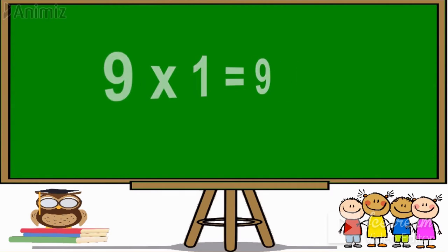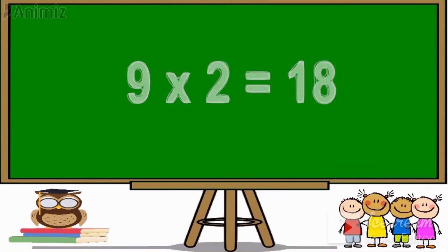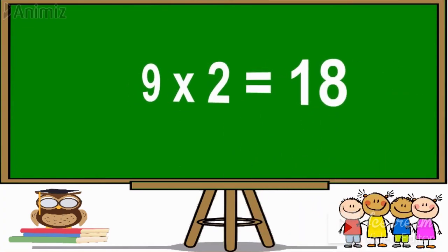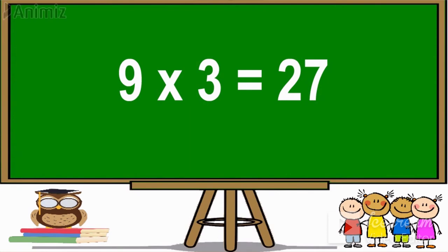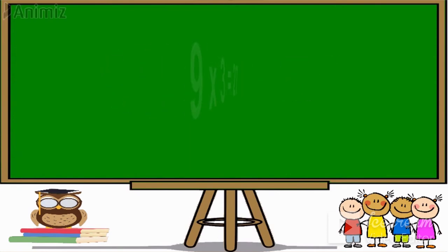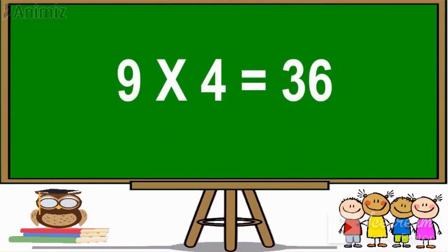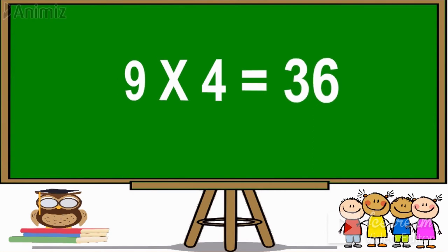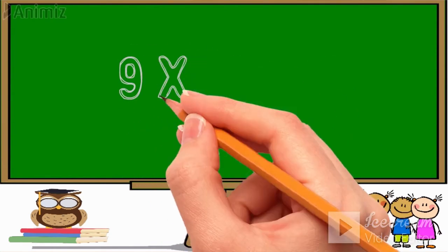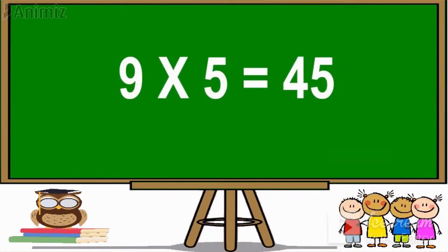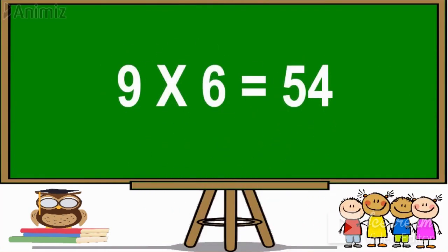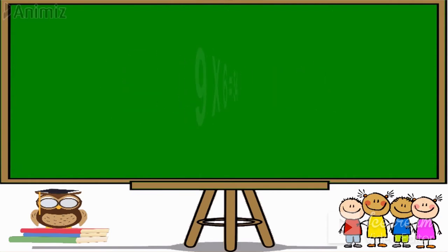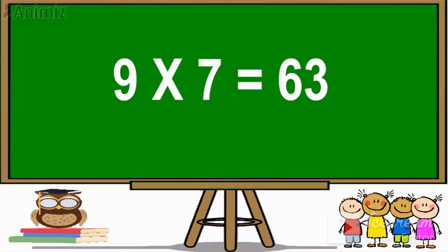Table of 9. 9 ones are 9. 9 twos are 18. 9 threes are 27. 9 fours are 36. 9 fives are 45. 9 sixes are 54. 9 sevens are 63.